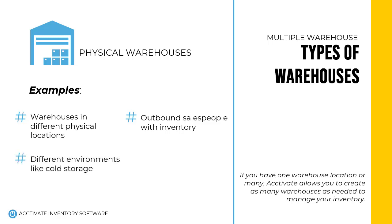A physical location can also mean you create a warehouse not only for the main part of your facility, but you may also create one for when you store products in different environments, such as cold storage. Or you could have a shipping container for storage on-site at your warehouse. That container would be added as a warehouse in Activate so you always know what inventory is stored there. Each of these would be seen as a separate warehouse in the Activate system.